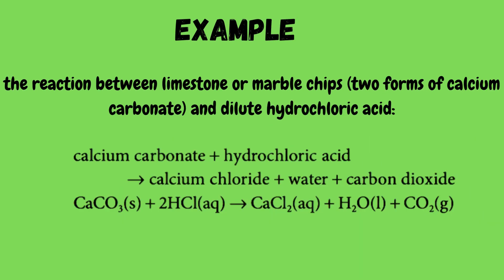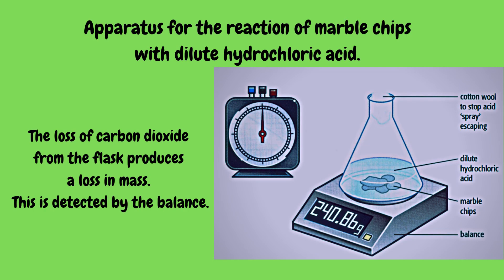For example, the reaction between limestone or marble chips and dilute hydrochloric acid: calcium carbonate plus hydrochloric acid gives calcium chloride plus water plus carbon dioxide. This is the apparatus for the reaction of marble chips with dilute hydrochloric acid. The loss of carbon dioxide from the flask produces a loss in mass, which is detected by the balance.